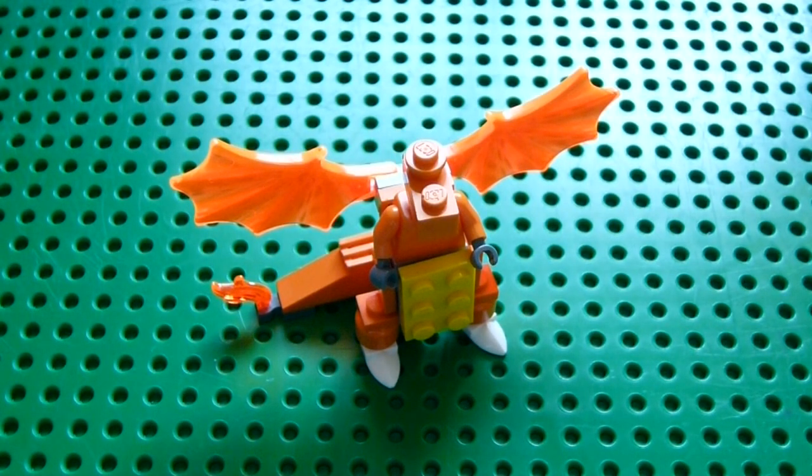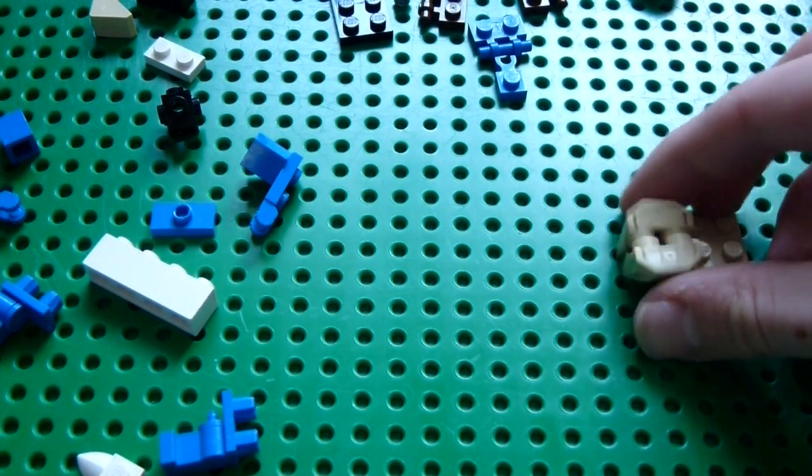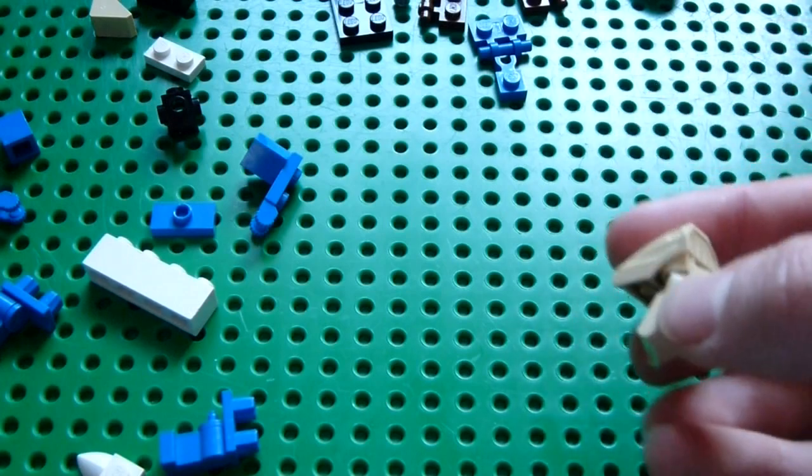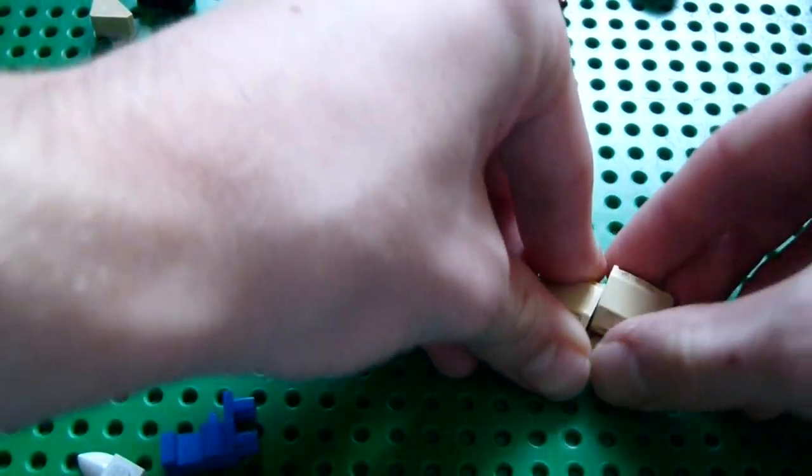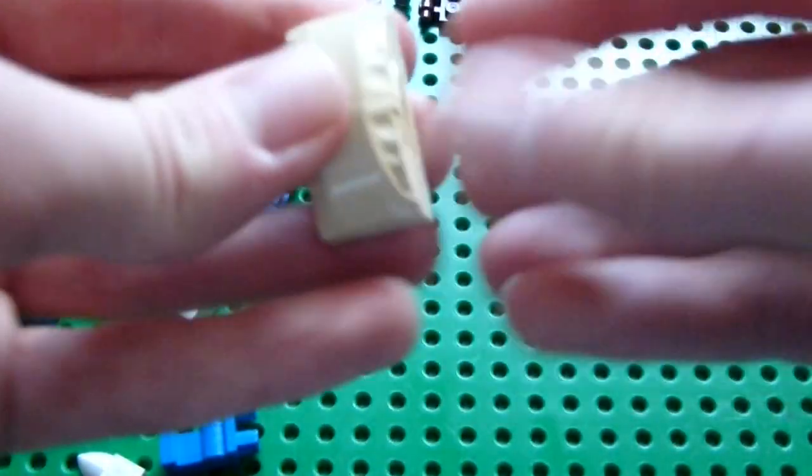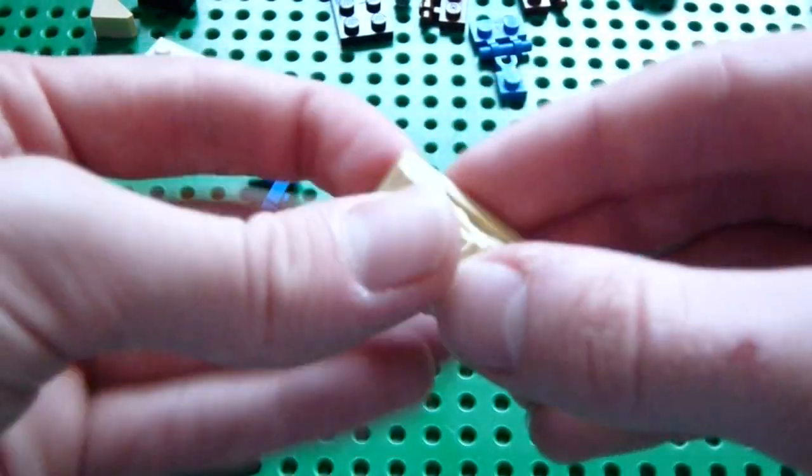And finally, on to Blastoise. Blastoise was the first of the starter Pokemon that they designed. And it's also the design I'm most satisfied with. In fact, I'd actually hardly change anything if I were to remake it. And it's basically got three distinct chunks that it can be easily split into. First one is just on its front side. Take two of these smooth, kind of curved sloped pieces and put them onto a beige 2x4 plate.